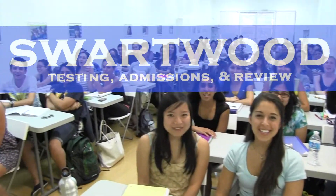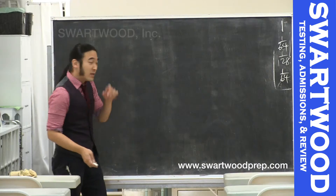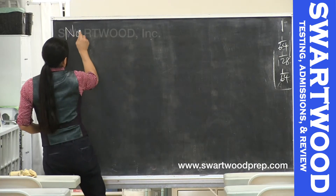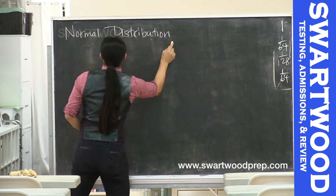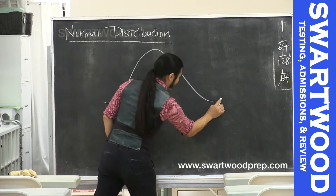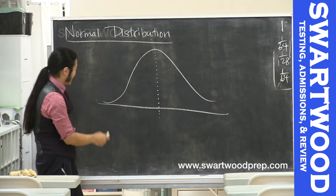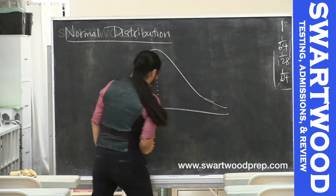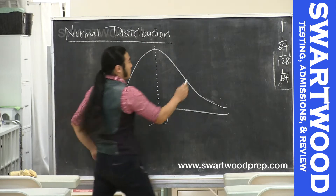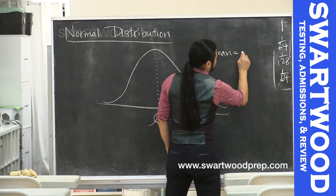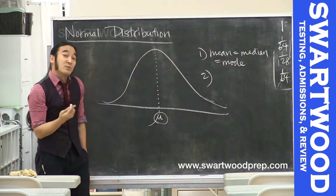Before we get started, we need to understand a little bit about the normal distribution. You've probably already seen this from the last midterm, but it's good to review. The normal distribution looks kind of like this, and the population mean sits right here — the average. The mean, median, and mode all sit at the same point. The second property is that it's pretty symmetric.